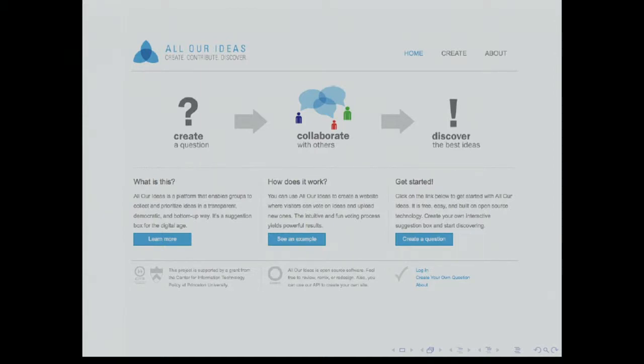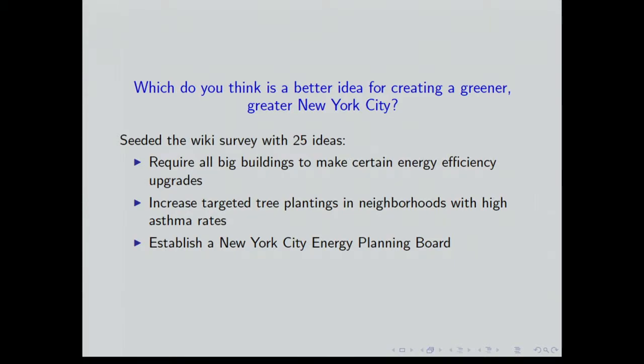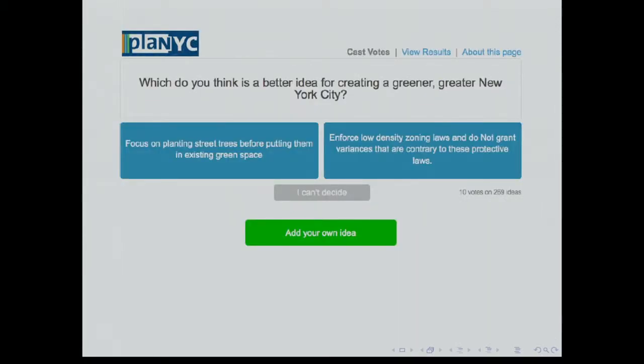What does it actually look like? I'm going to tell you a little bit about an example that we did with Mayor Bloomberg's office in New York. They wanted to collect public input on Plan YC 2030. This was the city's long-term sustainability plan. In addition to other forms of community outreach, they also created a wiki survey. Right now these wiki surveys allow for a single question. So this is the question that they picked: Which do you think is a better idea for creating a greener greater New York? And then you start it off with a bunch of different seed ideas. These are things like require buildings to make energy efficiency upgrades and so on. All the ideas in the system are limited to 140 characters to try to improve the user experience. We don't want big manifestos about the nature of city governance or something.